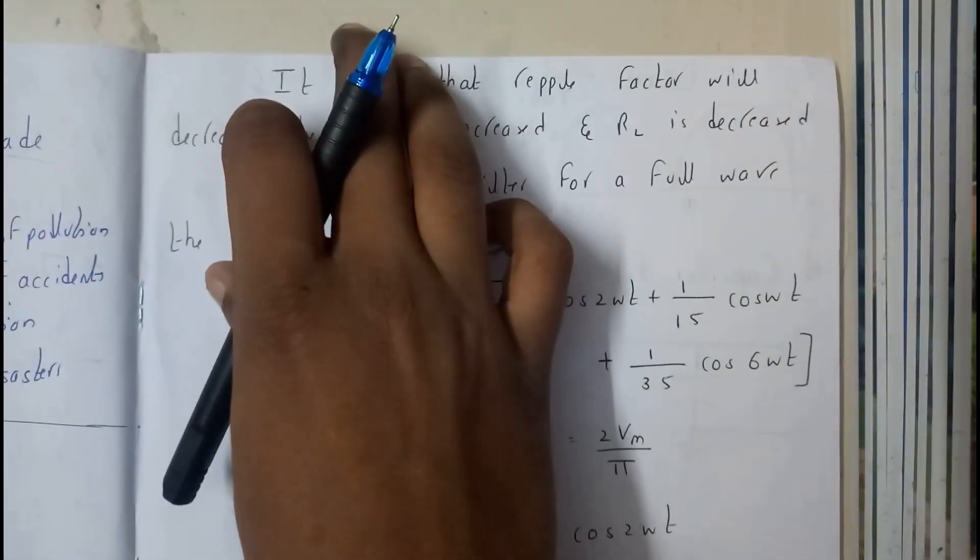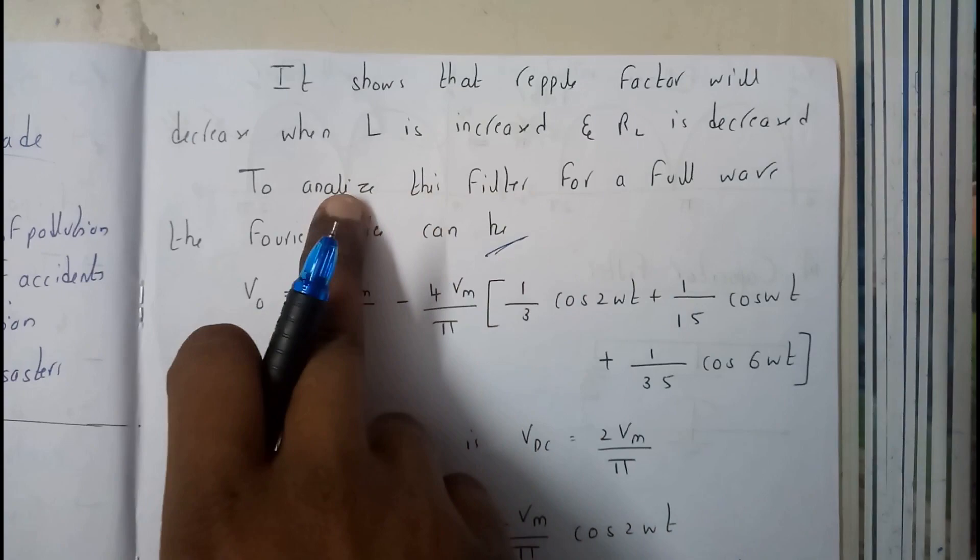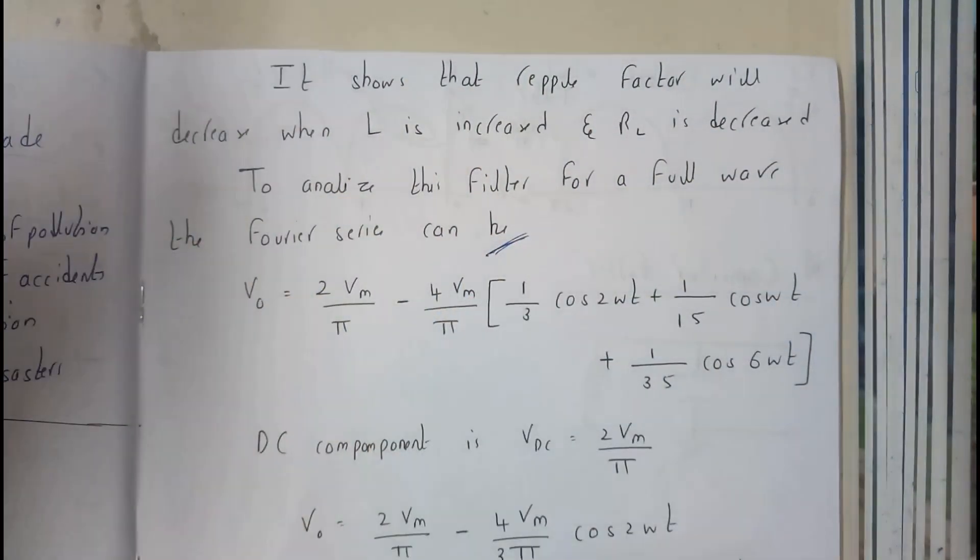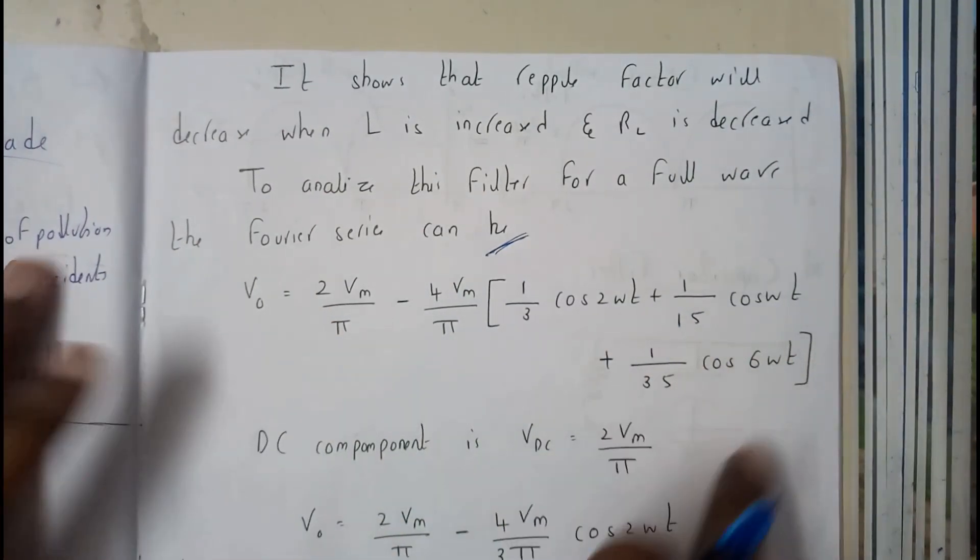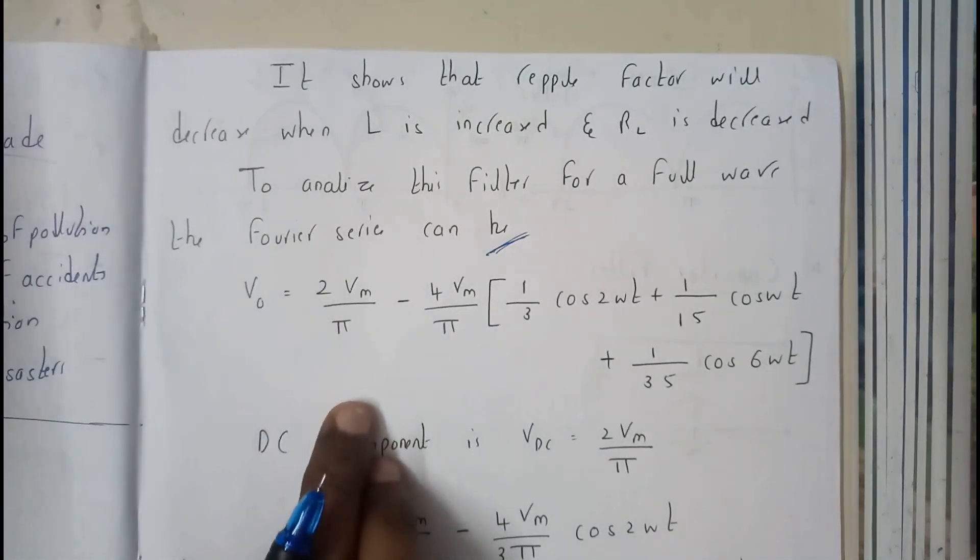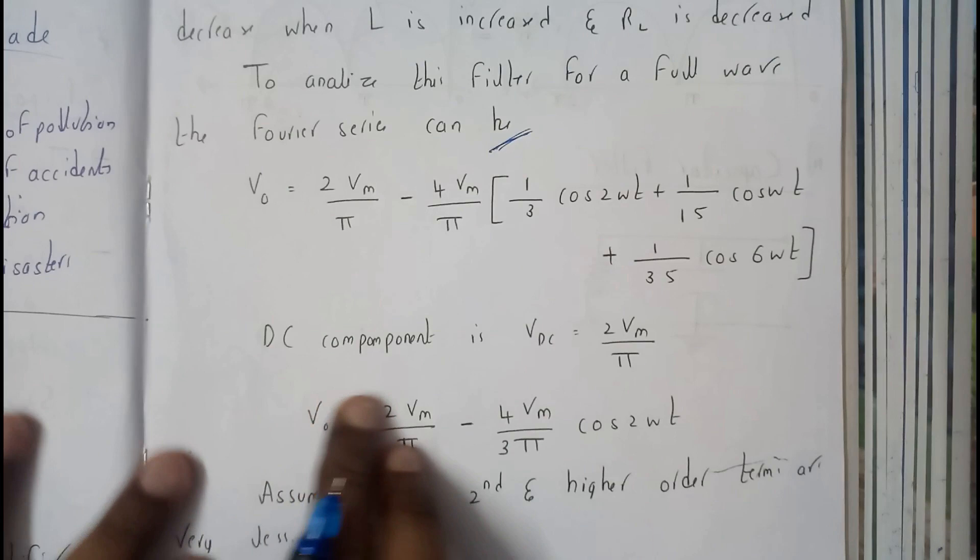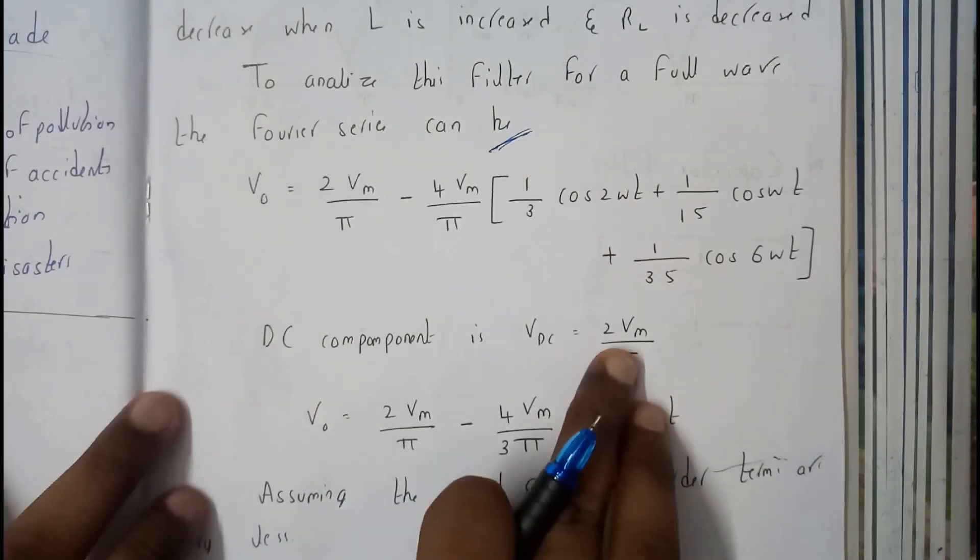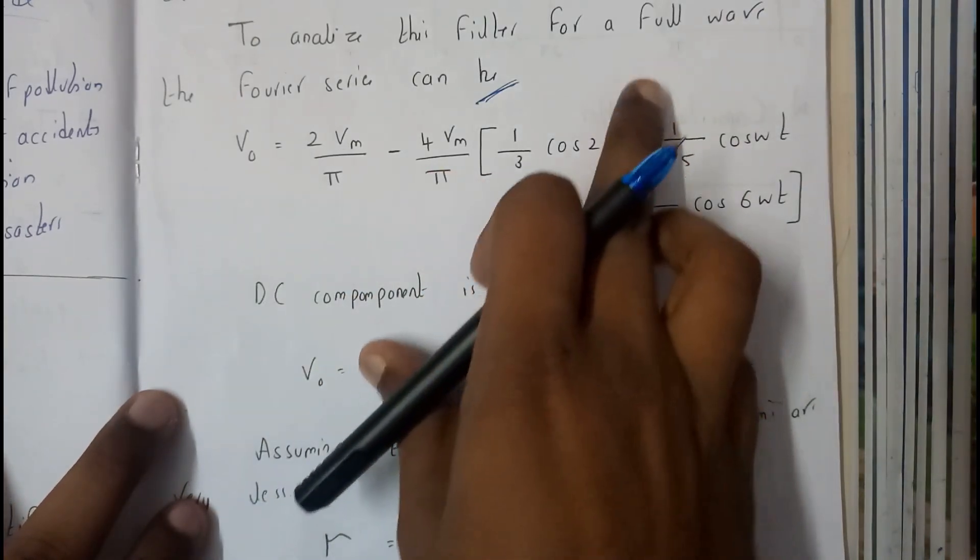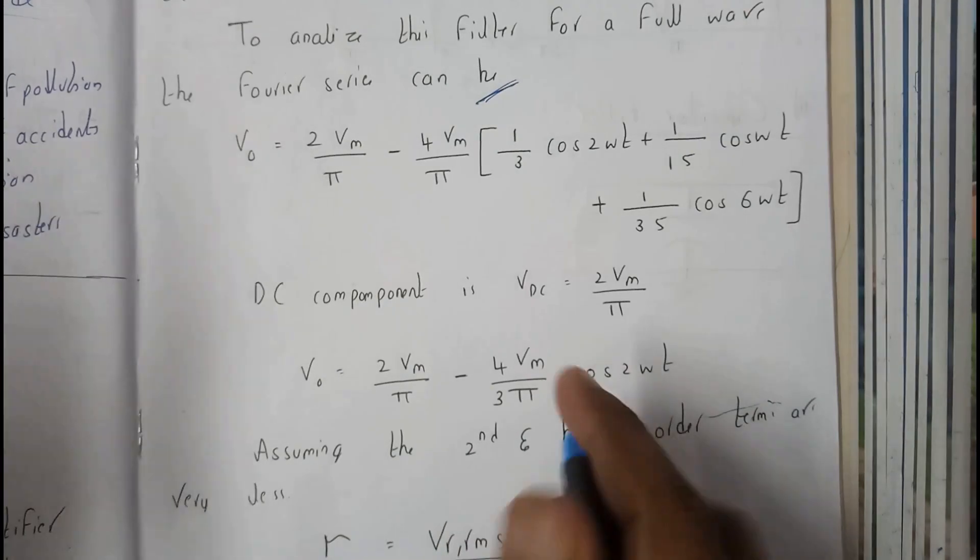It shows that the ripple factor will decrease when L increases and RL decreases. To analyze the filter for a full wave rectifier we use Fourier series. From the full wave rectifier we know VDC equals 2Vm by π. We took only the first term, neglecting the further terms, so we got this equation.